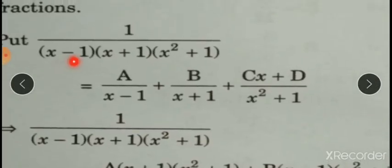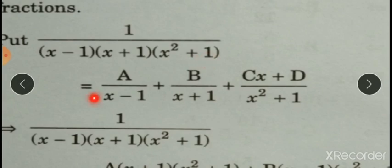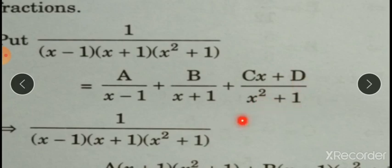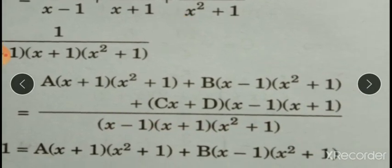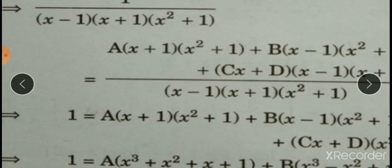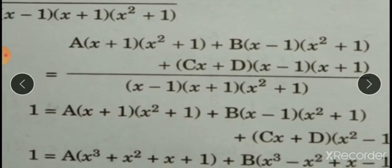So the denominator has first linear factor (x-1), second linear factor (x+1), and quadratic factor (x²+1). The partial fraction form is: a upon (x-1) plus b upon (x+1) plus (cx+d) upon (x²+1). After LCM, denominators cancel. Now 1 equals a(x+1)(x²+1) plus b(x-1)(x²+1) plus (cx+d)(x-1)(x+1). Multiplying out gives this expanded equation.